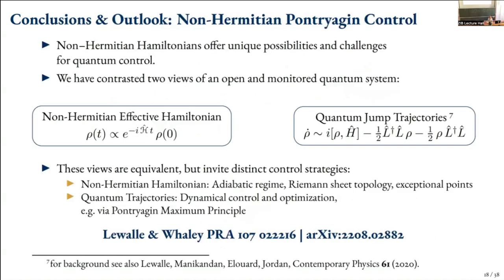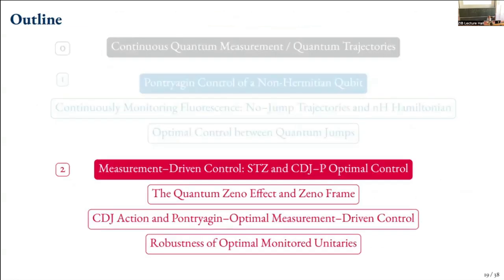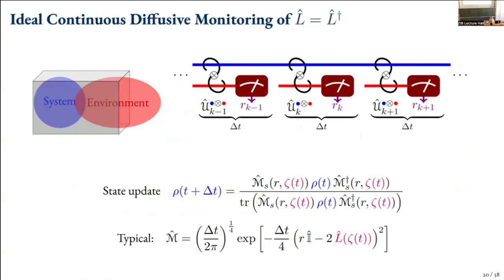That's the first part. What I've shown is that while the traditional view of these non-Hermitian effective Hamiltonians doesn't invite very effective control strategies, if you think about it in terms of quantum jump trajectories, you can use this very nice open-loop control to dynamically control the qubit system. Now I'm going to move to measurement-driven control, which is actually a much bigger topic.